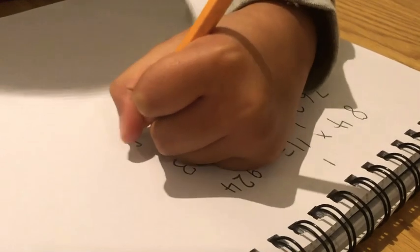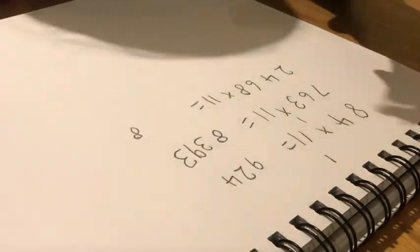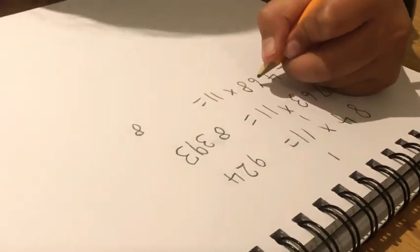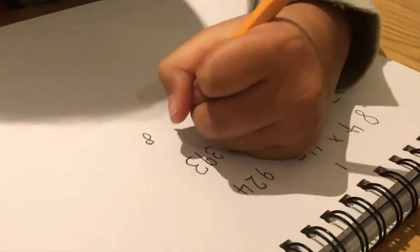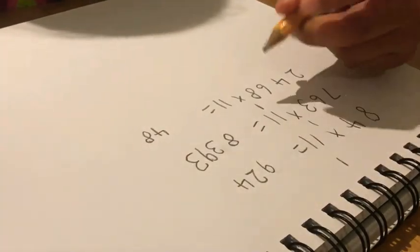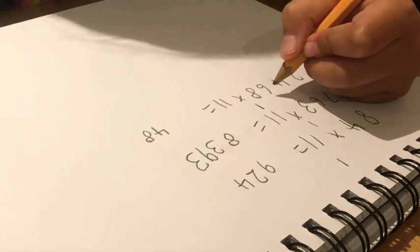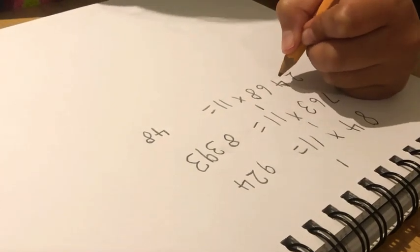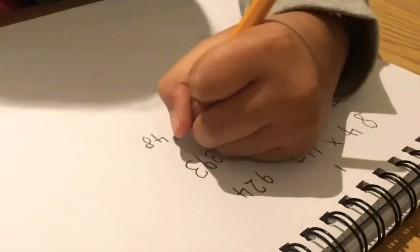So 8 goes in the ones place. It stays as it is. So 8 add 6 equals 14. And now 6 add 4 equals 10. And 10 add 1 equals 11.